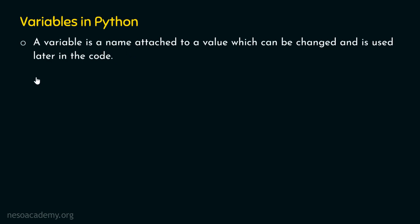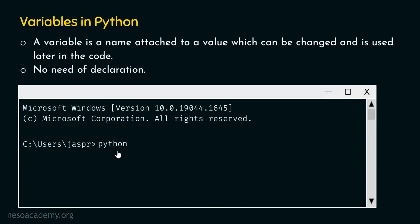Other than this, there is no need to declare a variable before using it in Python — no need of declaration. In order to understand these two points properly, we need to consider one simple example. Let's get into our command prompt and type python, then hit enter to activate the Python interactive shell. Now we are ready to type in our commands.